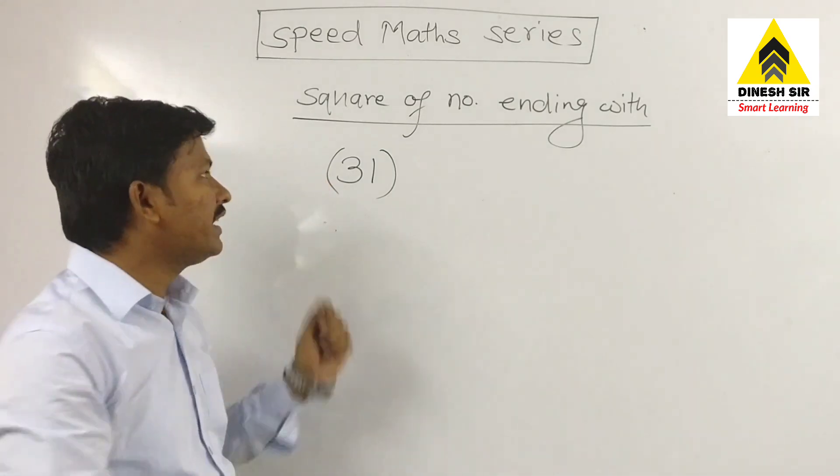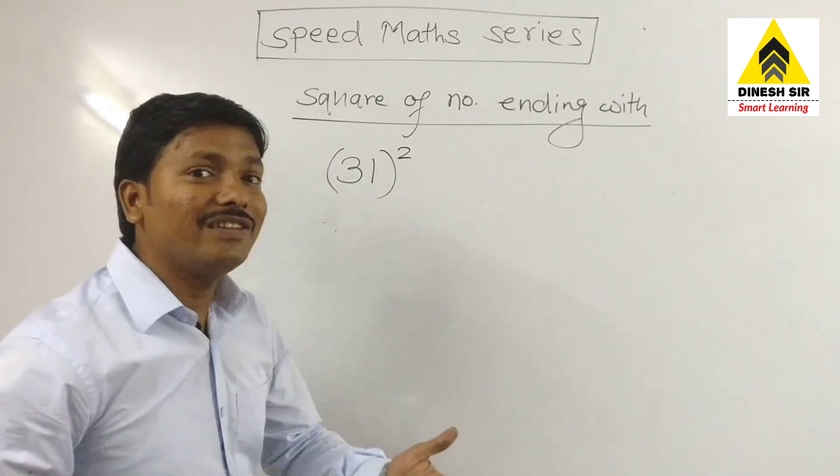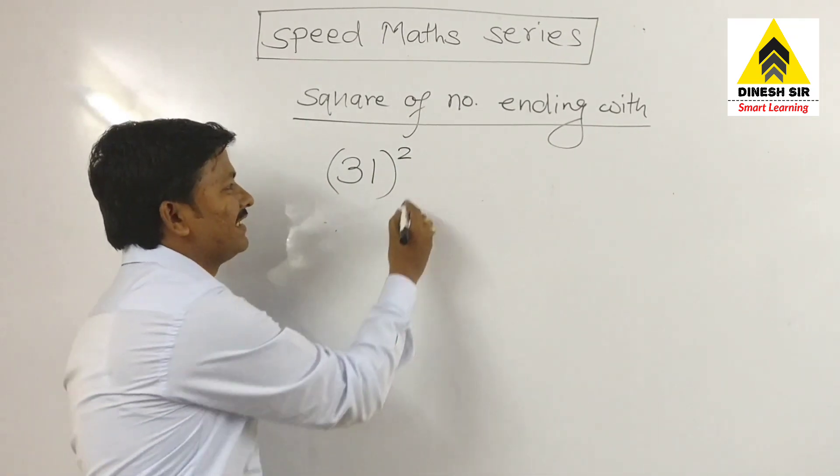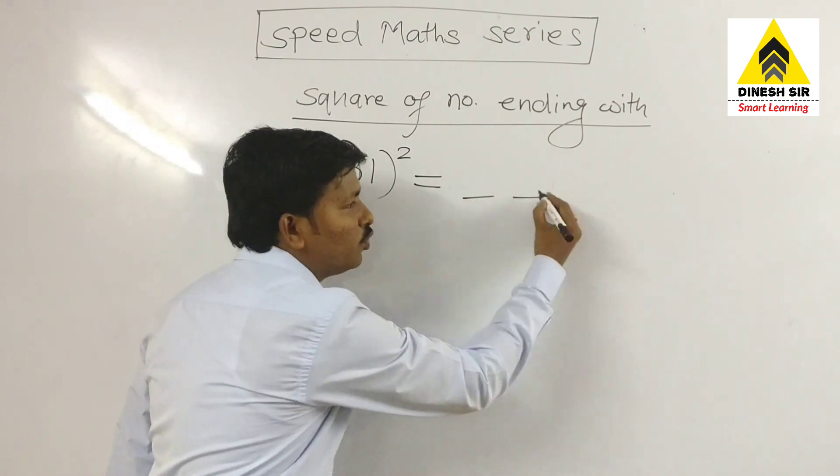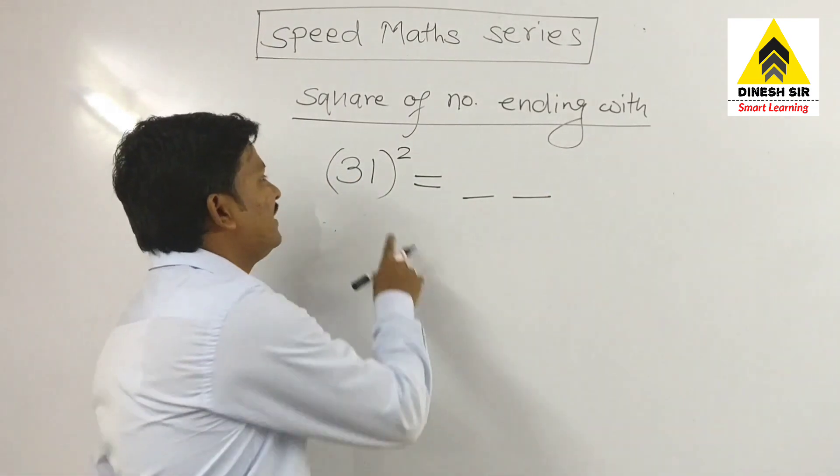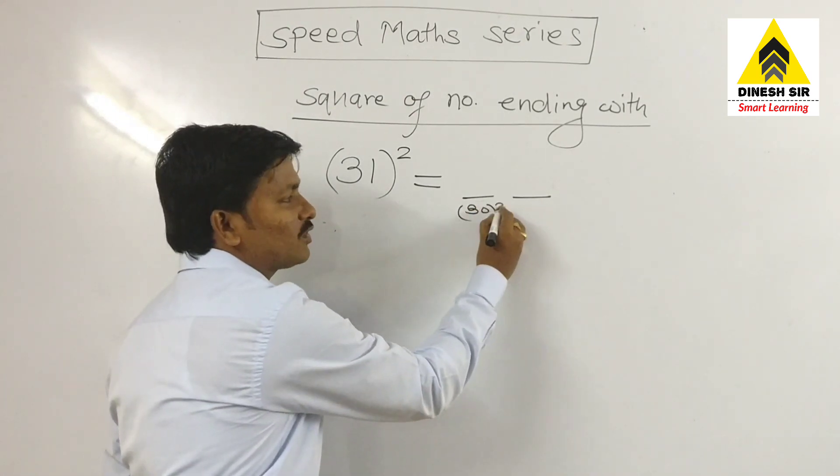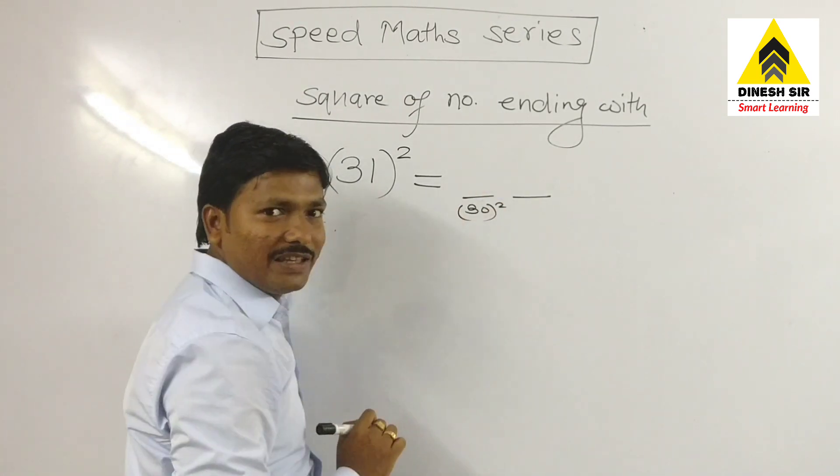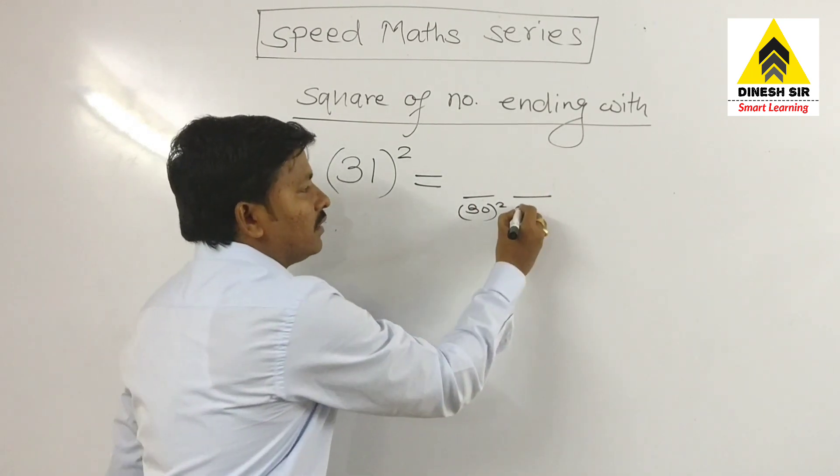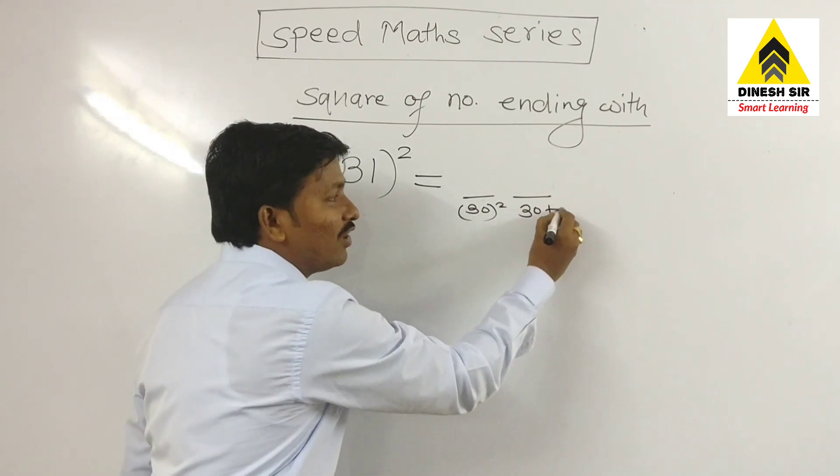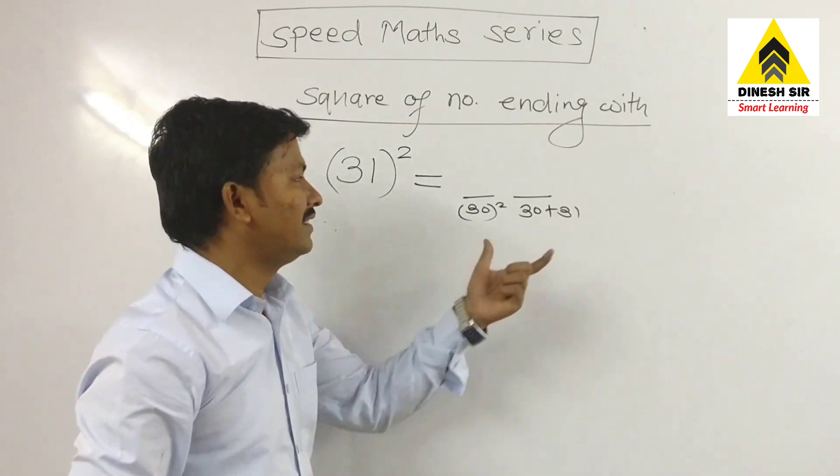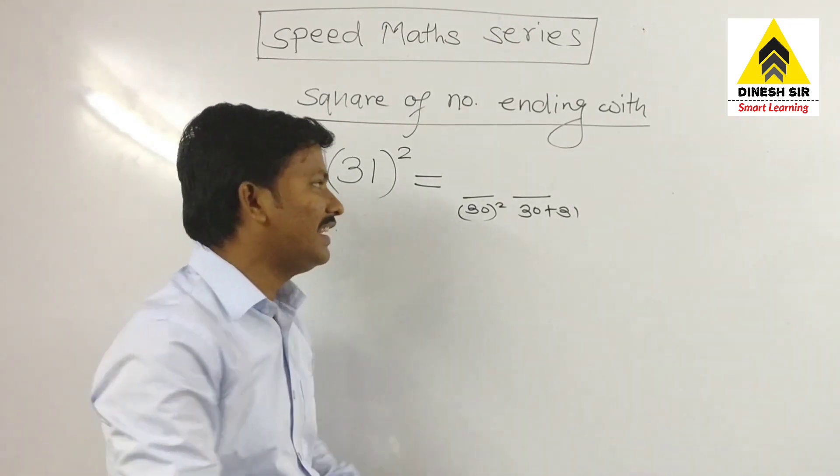If we want to take square, then let's see the new trick. Make two places for the answer. The nearest number is thirty, so take square of the thirty in the first place, and in the second place, add thirty with its conjugate number, means the next number. Then you will get the answer. How? Let's see.